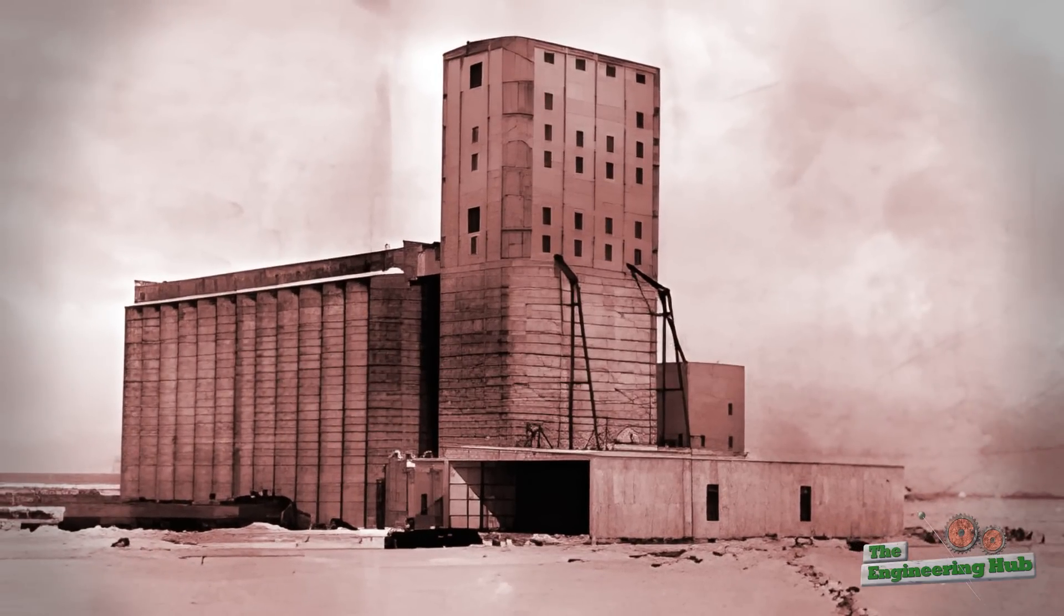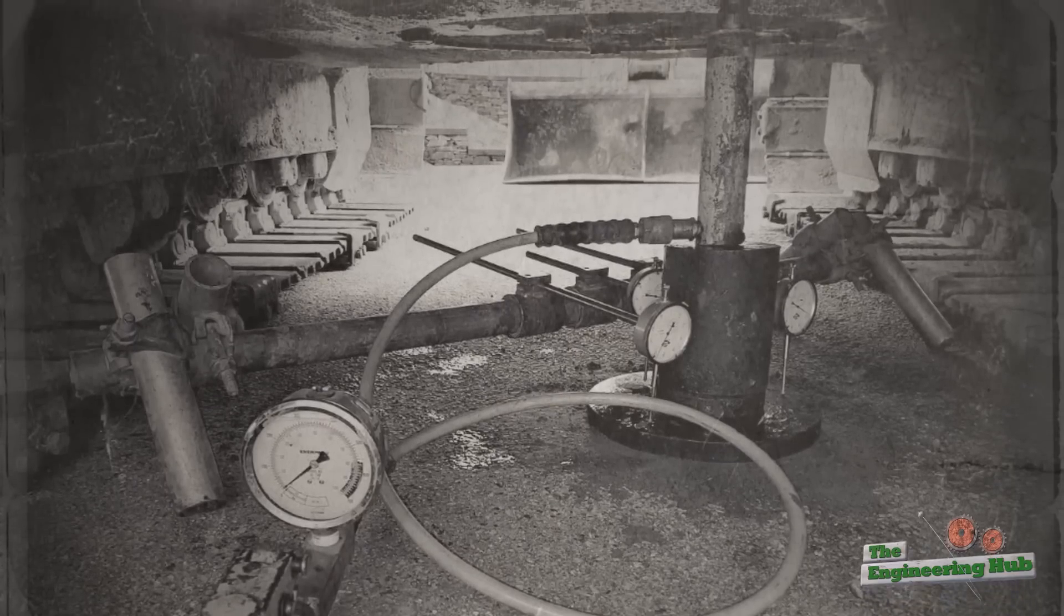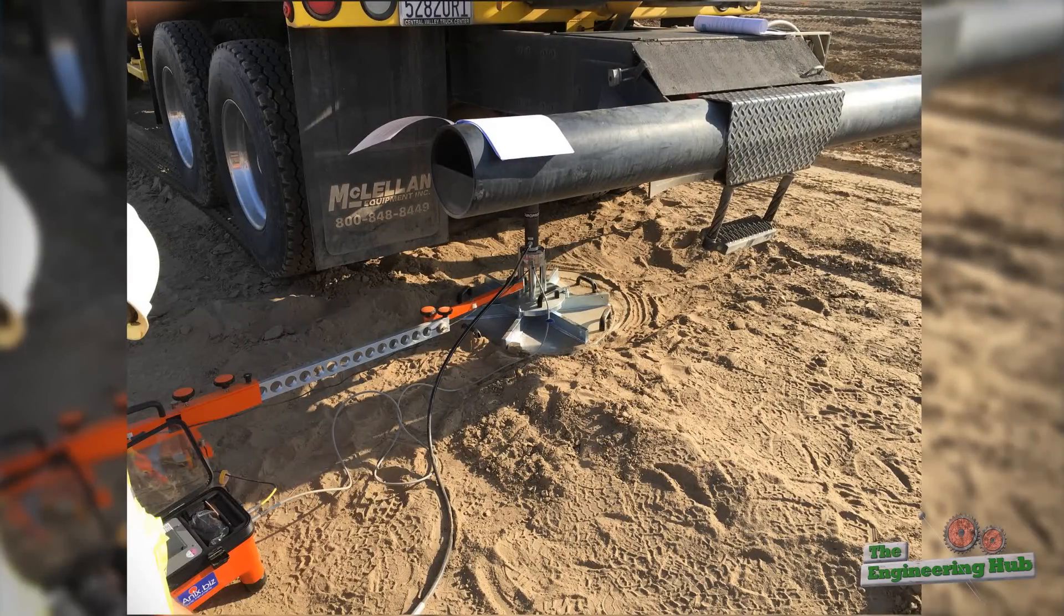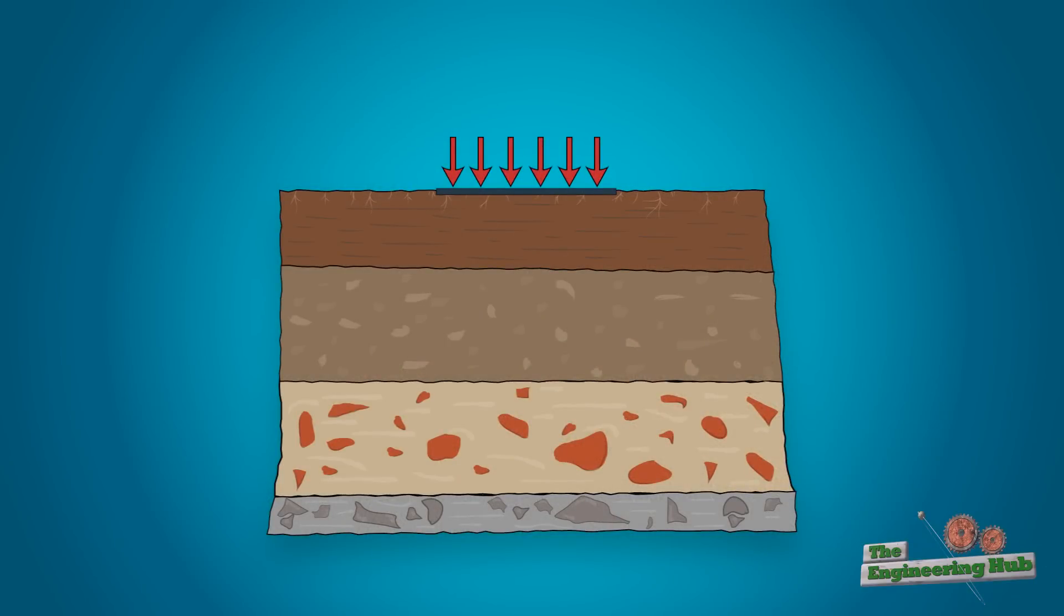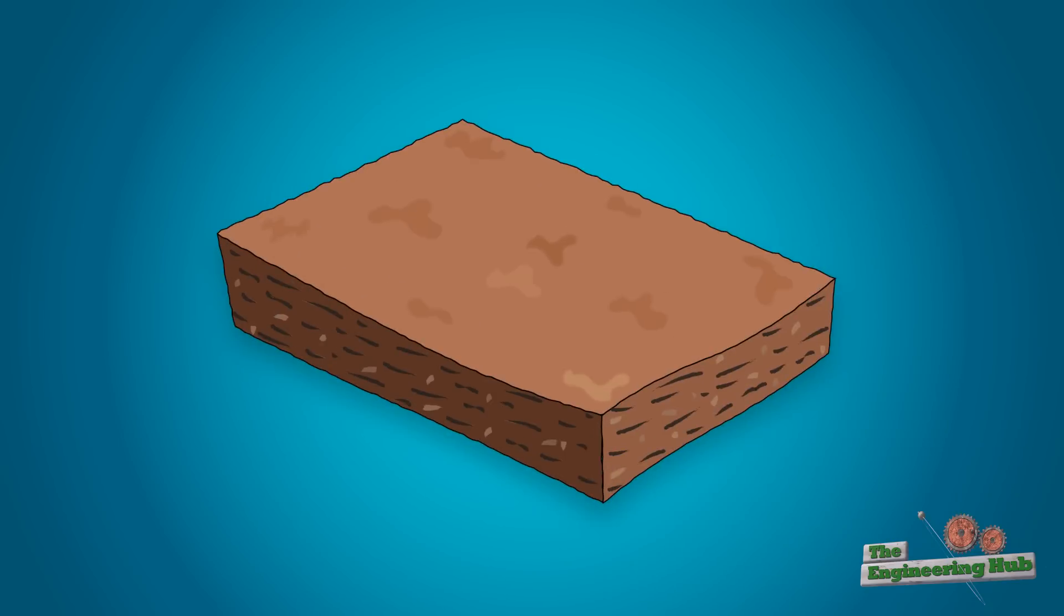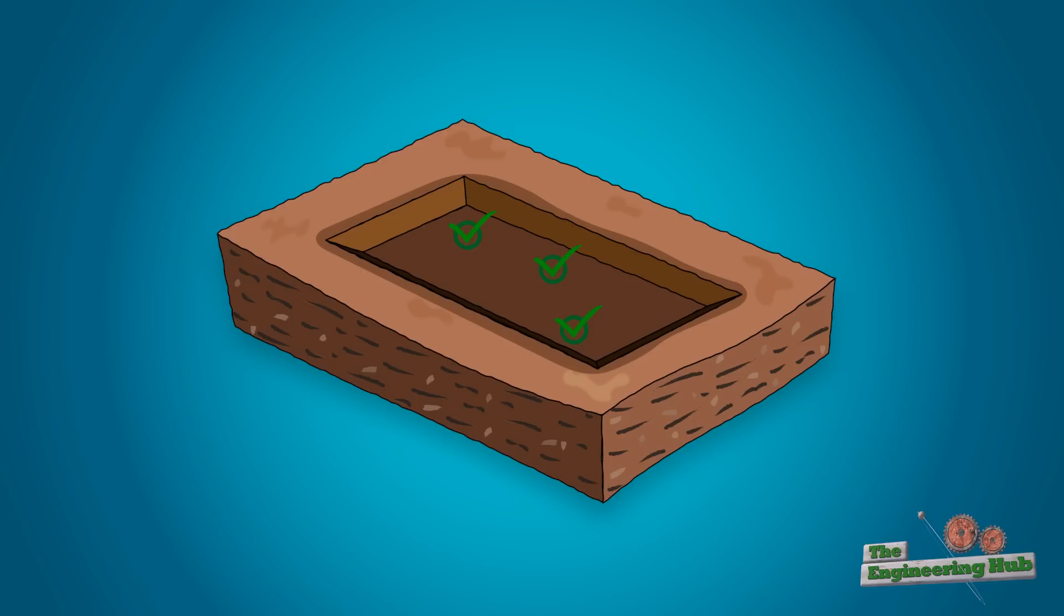When the excavation reached its design depth of 3.7 meters, field bearing capacity tests were carried out. A field bearing test consists of loading a plate of predetermined area until the soil under it starts to excessively settle or heave around the plate. Several tests were performed at the foundation level and all of them carried a pressure of at least 400 kPa. This means that a plate of 1m² could carry more than 40,000 kilos before the soil begins to fail.